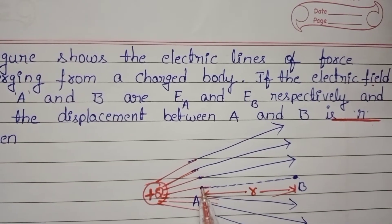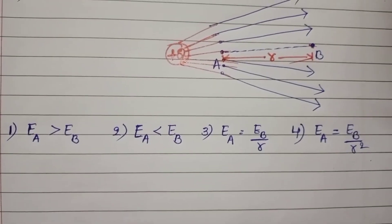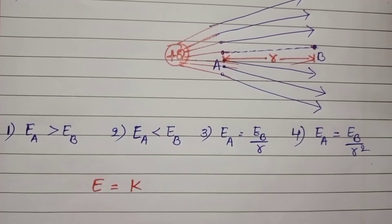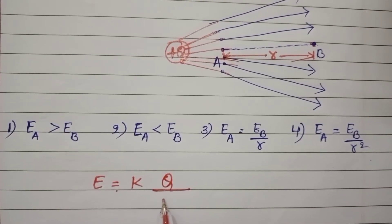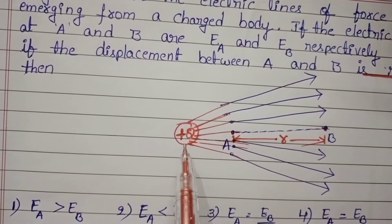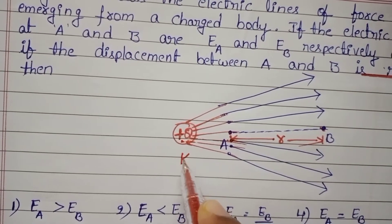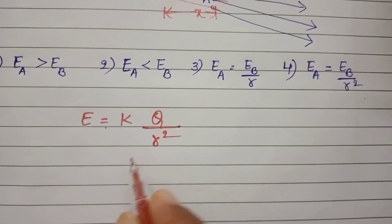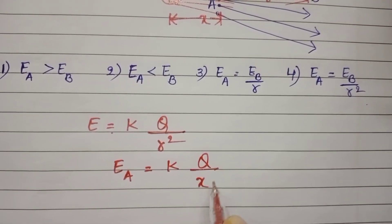We want the electric field intensity at points A and B. We know the electric field intensity at any point is E = KQ/r², where K = 1/(4πε₀). From this charge to point A, we don't know this distance — let it be X. So the intensity of electric field at point A is EA = KQ/X².